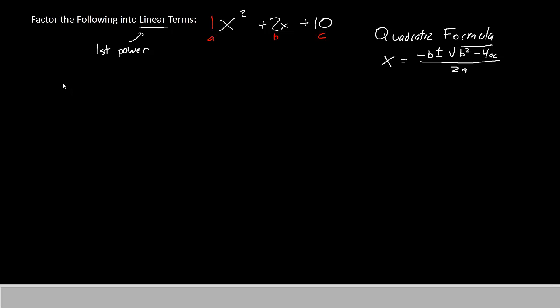Let's give this a try. We'll have X equals negative B, which is negative 2, plus or minus square root, B squared is 2 squared or 4, minus 4 times A times C. So we'll have minus 4 times A, which is 1, times C, which is 10, all divided by 2A. Since A is 1, this will just be 2 times 1.